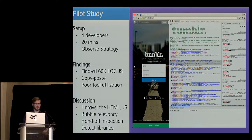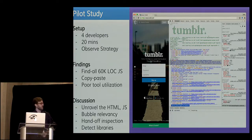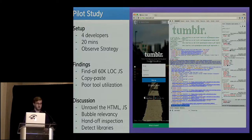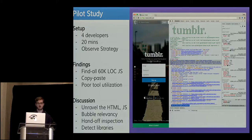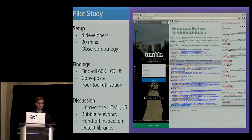We did find some commonalities in their strategy. There are 60,000 lines of unminified JavaScript in Tumblr. What they did is they copy and pasted a lot, they used Command-F to find all, and there was really poor tool utilization — inspecting with Chrome or Safari and looking for ways to get in and discover what the JavaScript was, such as DOM breakpoints or inspecting event handlers.